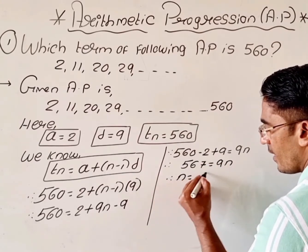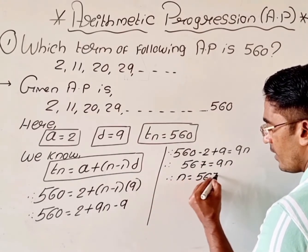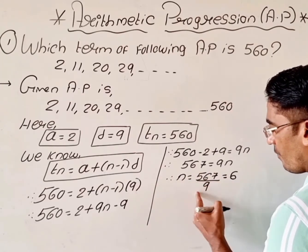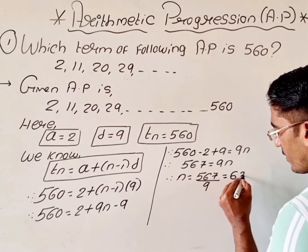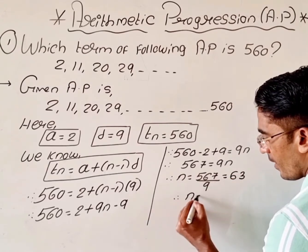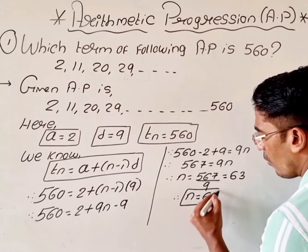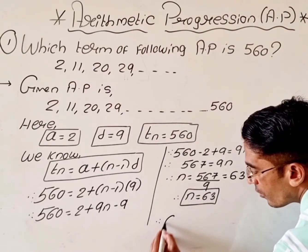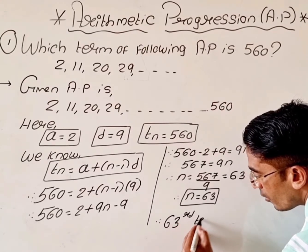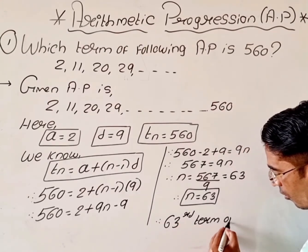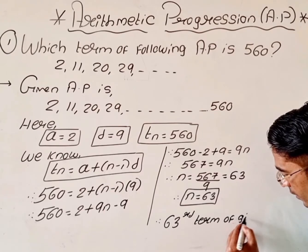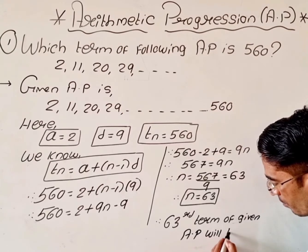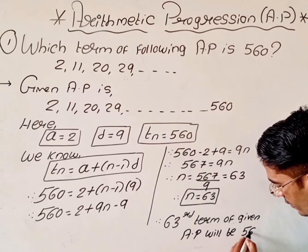Therefore N is equal to 567 divided by 9, which equals 63. Therefore N is equal to 63. So I can say therefore the 63rd term of the given AP will be 560.